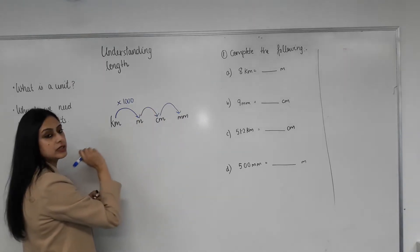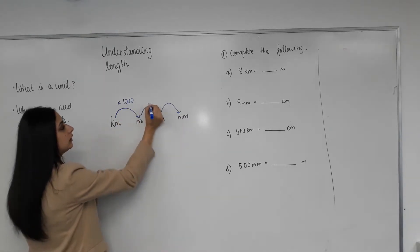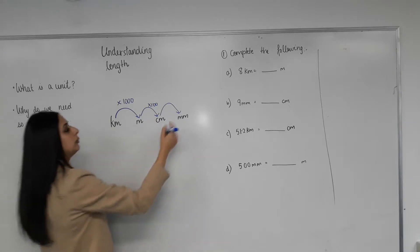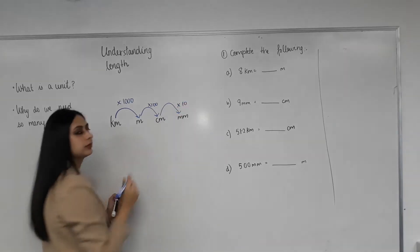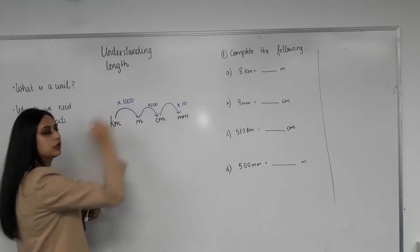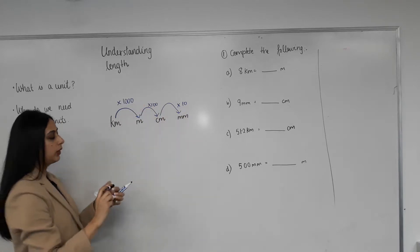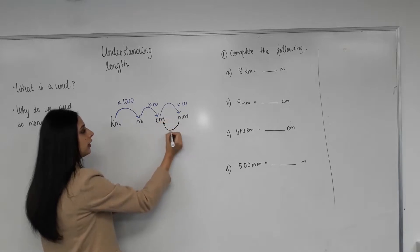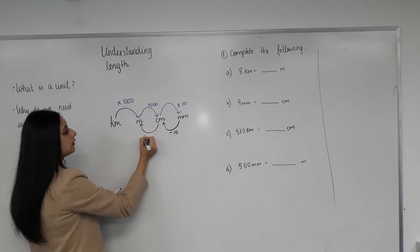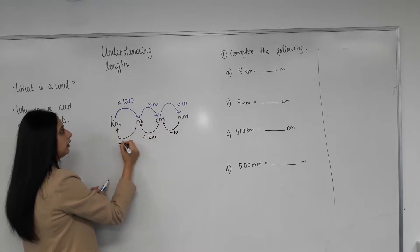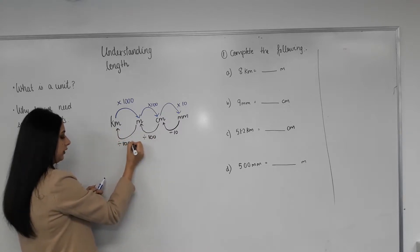How many centimeters in a meter? Hundred. How many millimeters in a centimeter? Ten. So you see — one zero, two zeros, three zeros. And then when we go in the other direction, what do we do? Divide. Divide by ten. Divide by a hundred. Divide by a thousand.